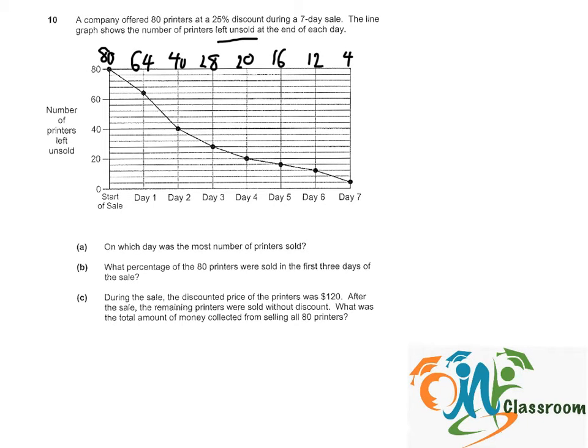So for part A, on which day was the most number of printers sold? So can we see that on day 1, the number of printers sold will be 80 minus 64. Number of printers sold on day 2 will be 64 minus 40 and so on. So to find the most number of printers sold, we just need to find the steepest line. As we can see from day 1 to day 2, the line is the steepest.